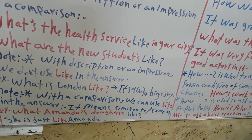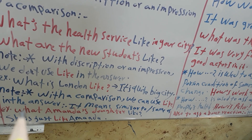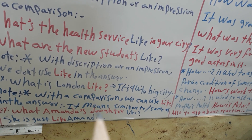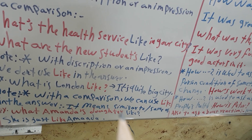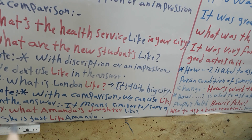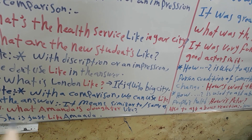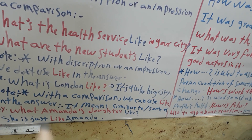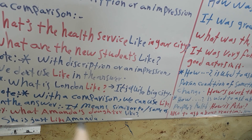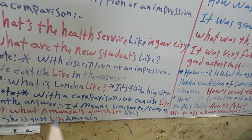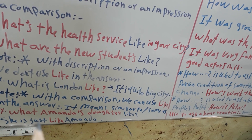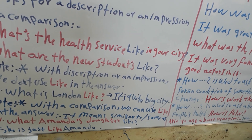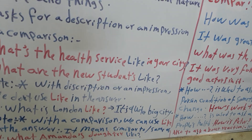For example: 'What is Amanda's daughter like?' The speaker asked about Amanda's daughter. The answer is: 'She is just like Amanda.' Here we use 'like' in the answer of the sentence, meaning she is similar to or the same as Amanda.